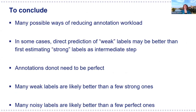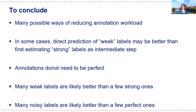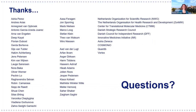To conclude, there are many possible ways of reducing annotation workload. I've shown mostly learning from weak labels, but also some approaches that learn better models from small datasets. In some cases, direct prediction of weak labels may actually be better than estimating the strong label as an intermediate step, because in many cases the weak label—the overall lesion load or lesion volume—is actually the main quantity of interest. Annotations don't need to be perfect: many weak labels are likely better than a few strong ones, and many noisy labels are likely better than a few perfect ones. Thank you for your attention.